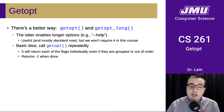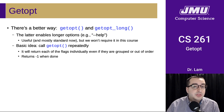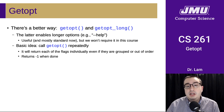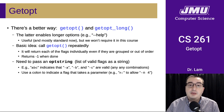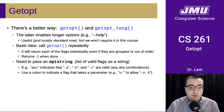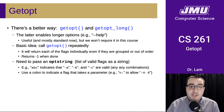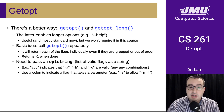The idea is that you call getopt repeatedly, and every time it returns it gives you one of the flags — even when they're grouped or out of order. When there are no more flags, it returns negative one. You need to tell it which flags are valid by passing in something called an opt string, which is a list of valid flags. For instance, an opt string of 'ABC' indicates that dash A, dash B, and dash C are all valid flags, and any combination would be valid as well.